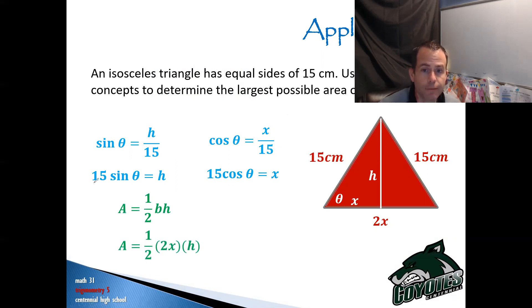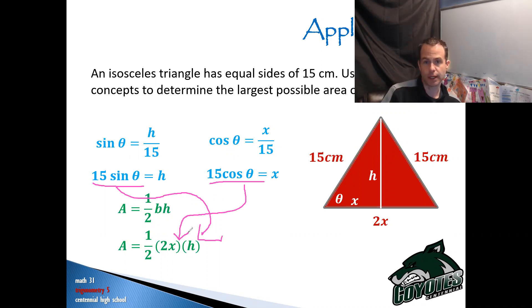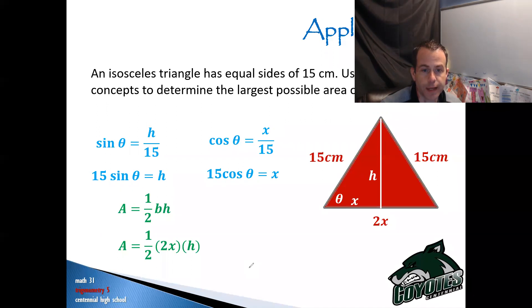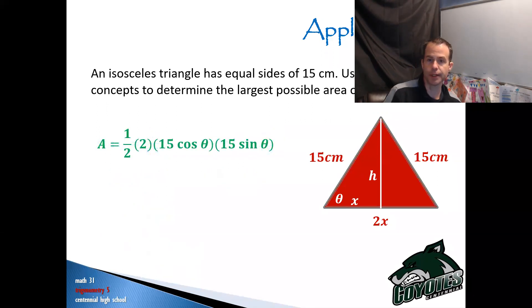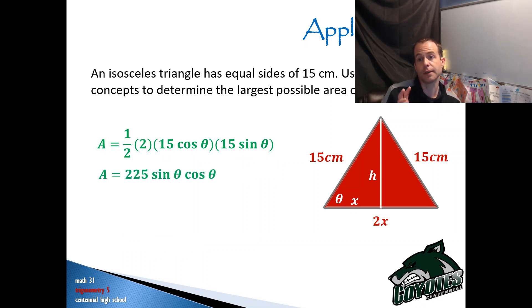We now have a way to represent h using trig functions and a way to represent x using trig functions. So I'm just going to replace x with 15 cos theta and replace h with 15 sine theta. That gives me one half times 2 — that cancels — and 15 times 15 is 225. So 225 sine theta cos theta is the representation of the area.